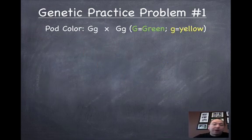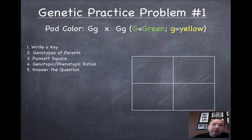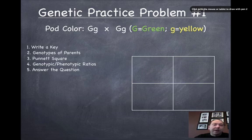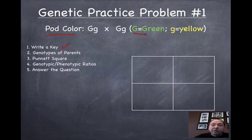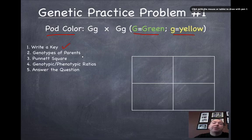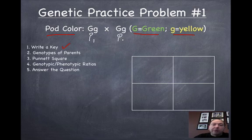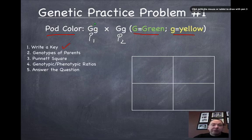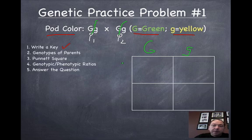Now let's go over a practice problem. We'll go through the five steps using this example. We're going to look at pod color, and a cross is already given. The first step is to write a key, which has been done for us: big G equals green, and little g equals yellow. The second step is to identify the genotypes of the parents, which has also been done for us — we'll call them parent one and parent two. In a word problem, this information would be given within the problem.